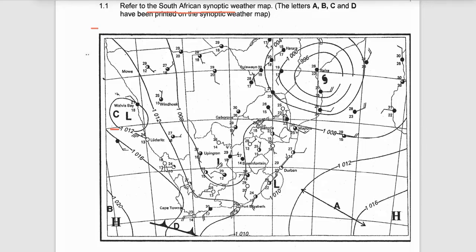Number one: it's the heat low in the interior of South Africa. You know that during summer there's a heat low — low pressure in the interior of South Africa — because there's more rising air during summer, as the equator is slightly closer to South Africa. In winter, you'd find that the interior of South Africa has the high pressure cell called the continental high, but in summer we have the heat low.